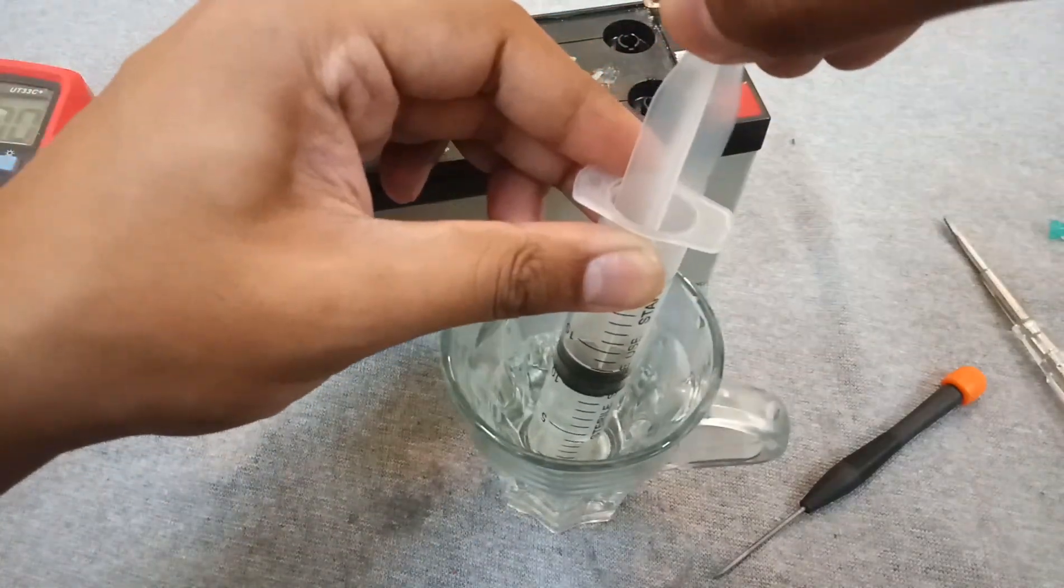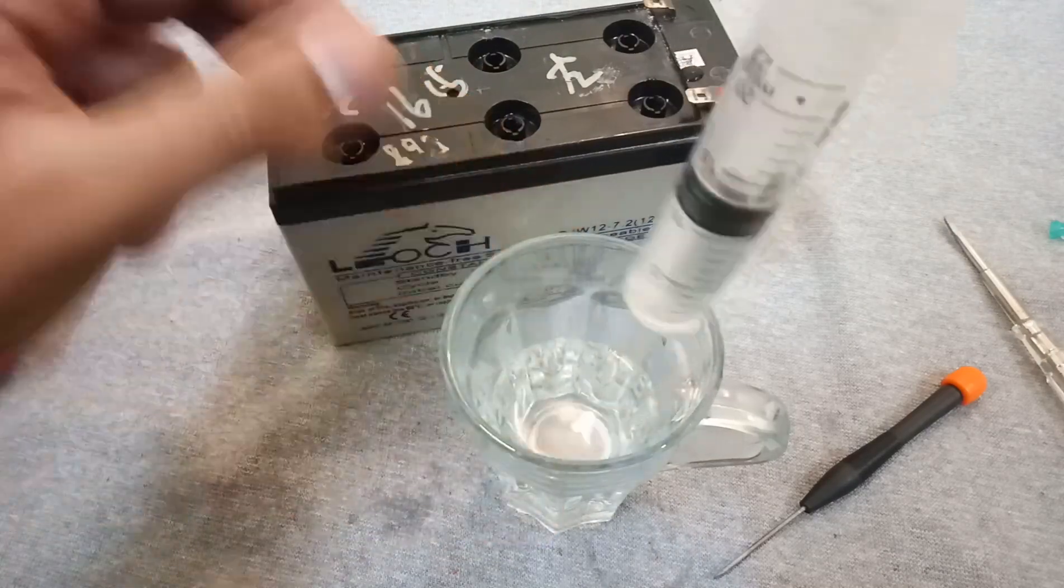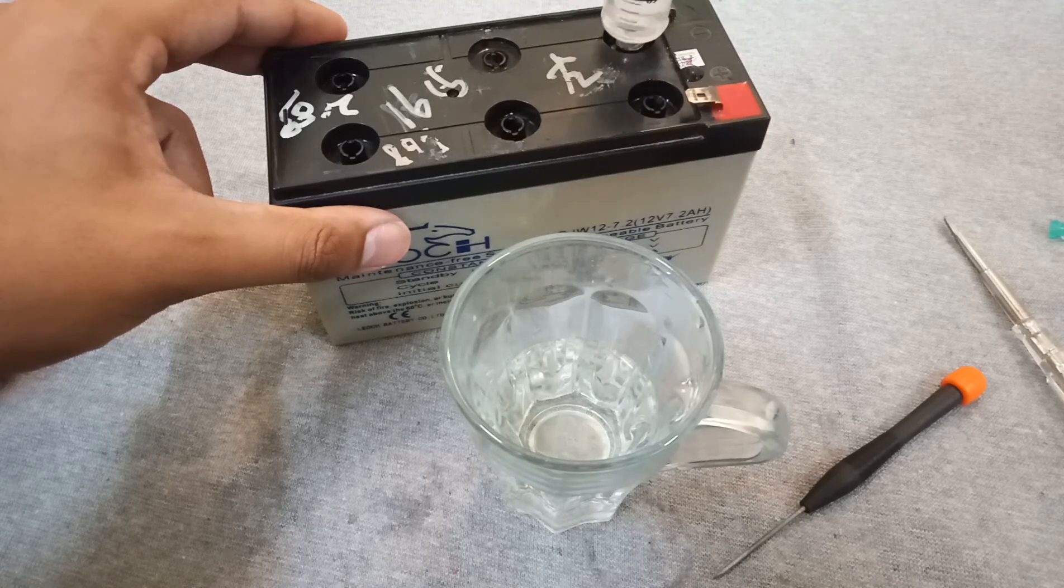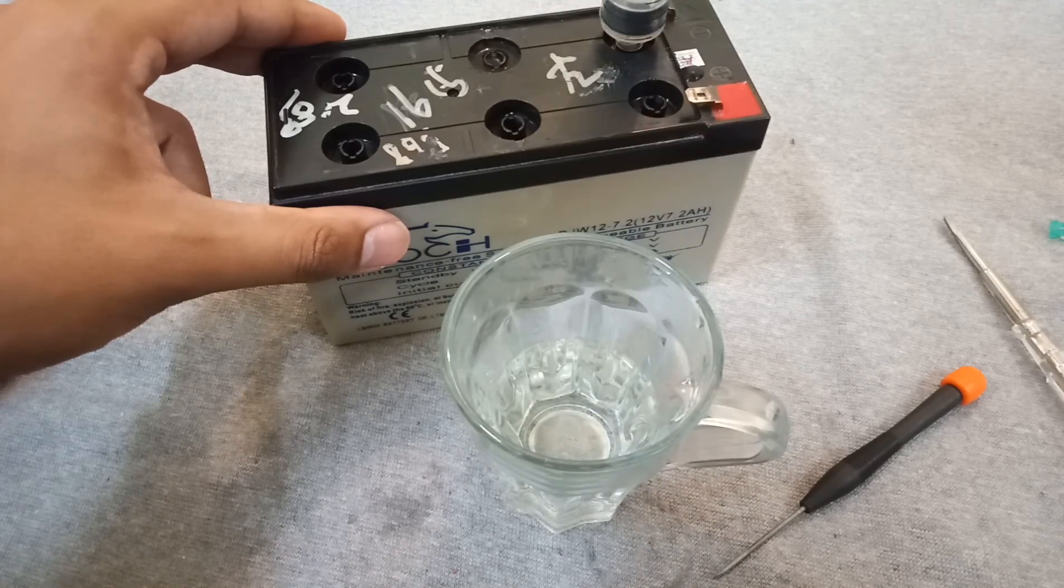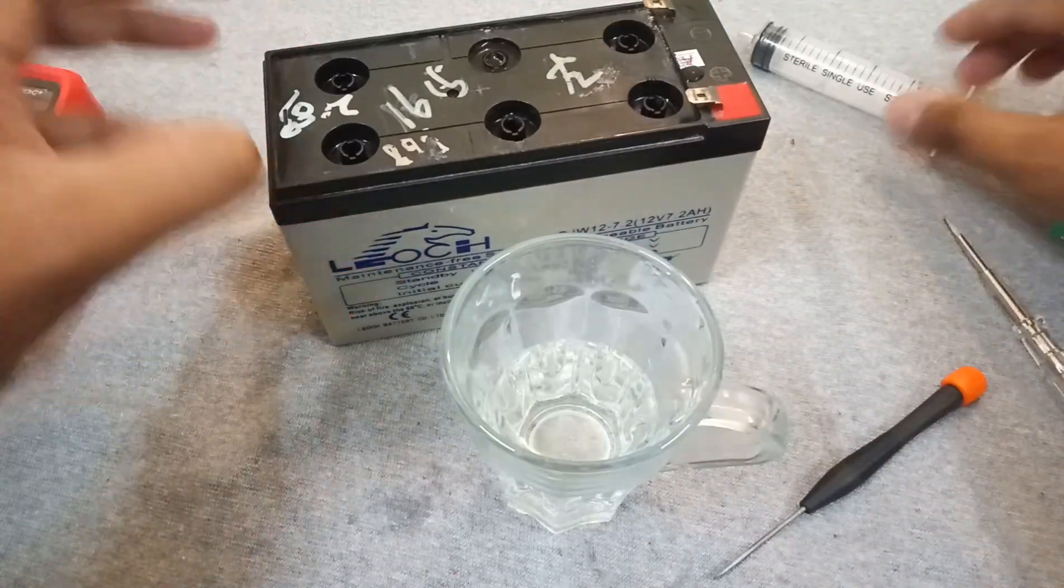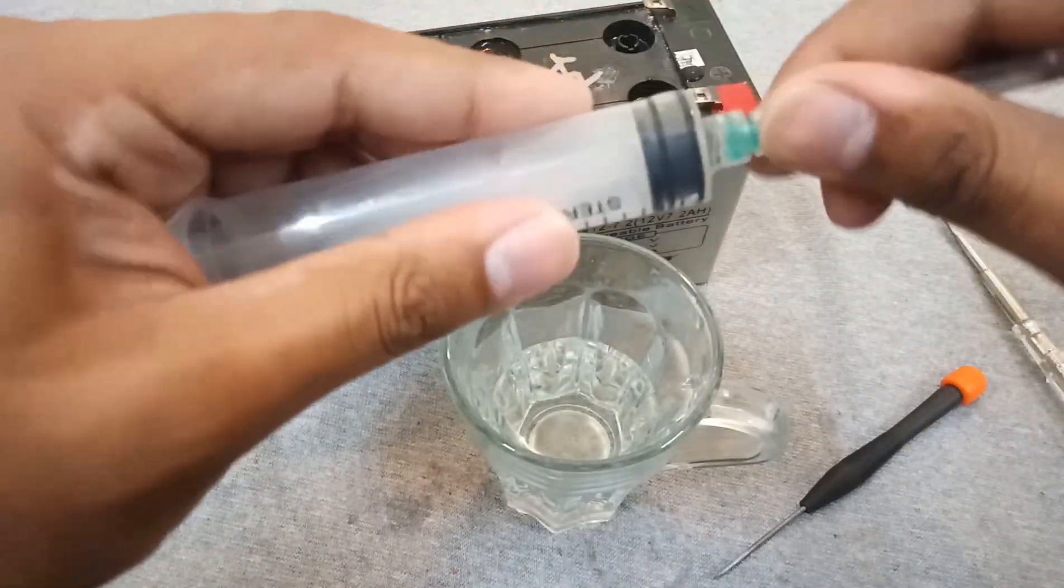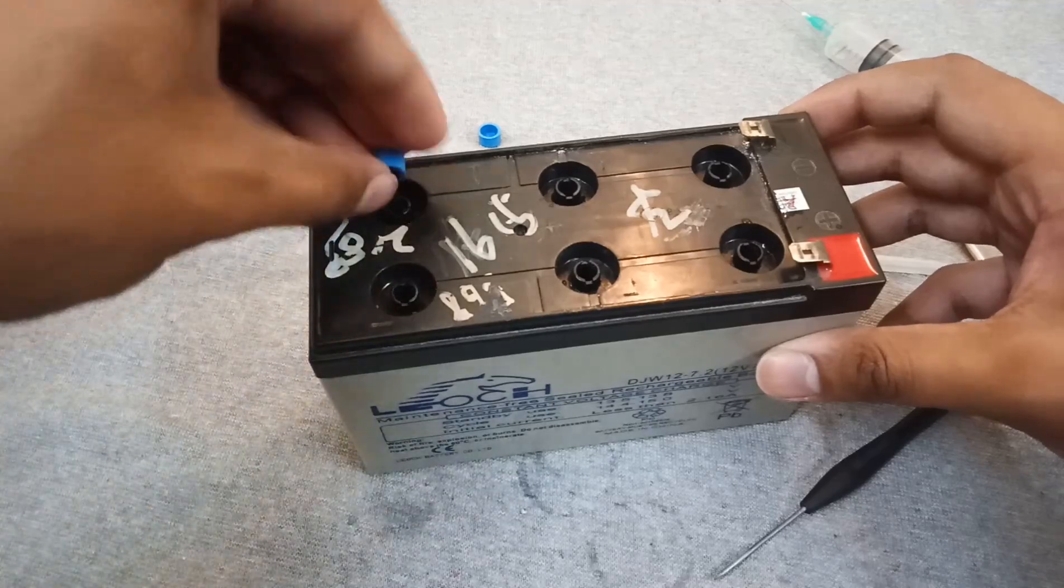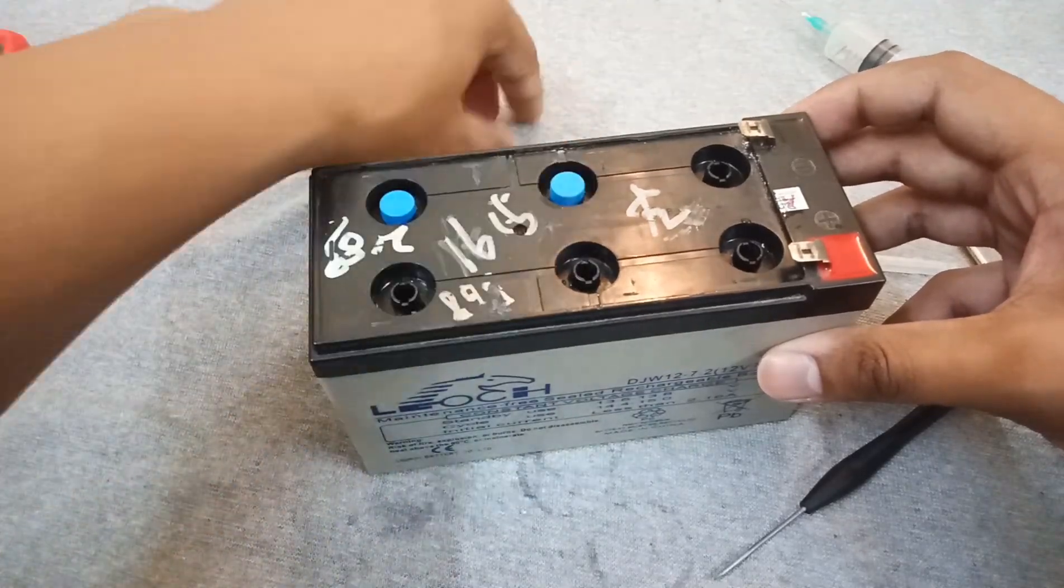Now another 10 ml for the other last two cells. Now the battery is filled with pure distilled water. Now put back the caps.